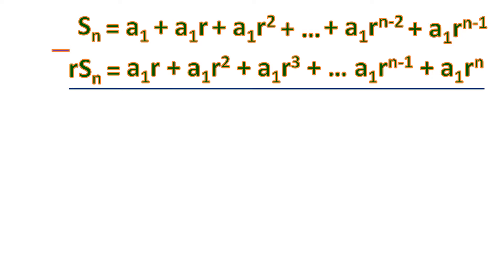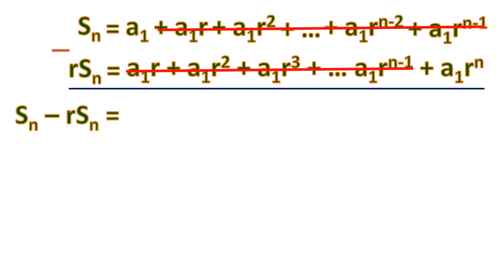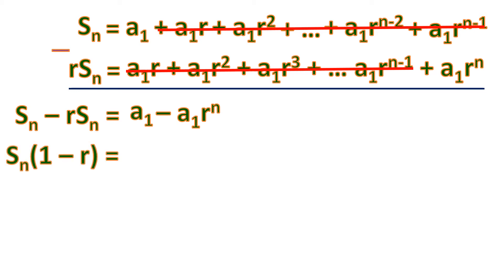We then subtract these two equations. Notice that the middle terms are exactly the same, so they cancel out and become zero. What's left is: S sub n minus r times S sub n equals a sub 1 minus a sub 1 r to the n. We then simplify by factoring out S sub n, leaving 1 minus r on the left.